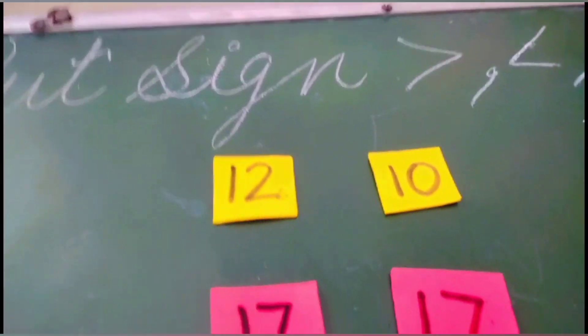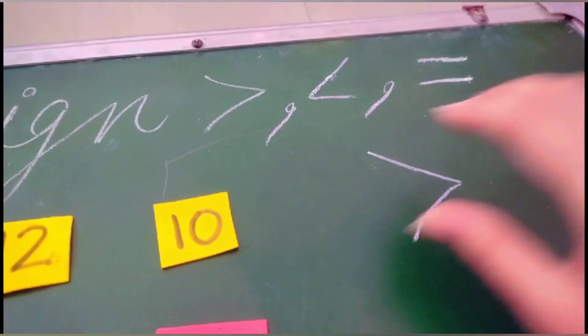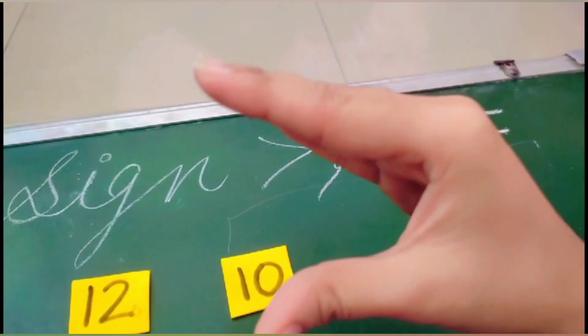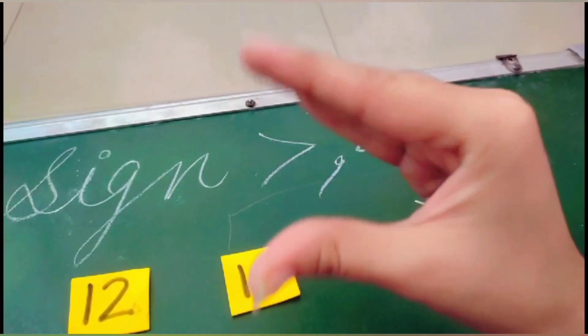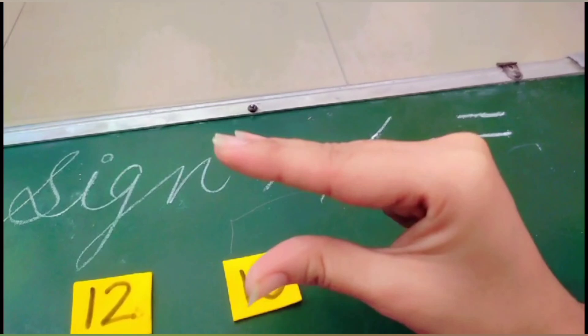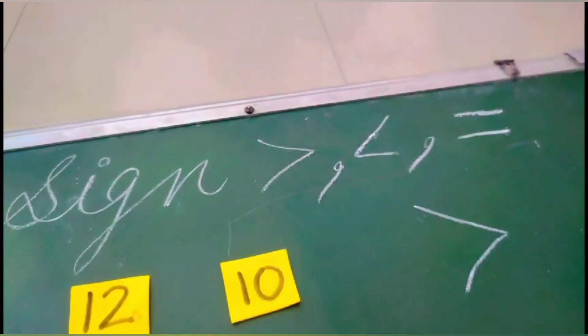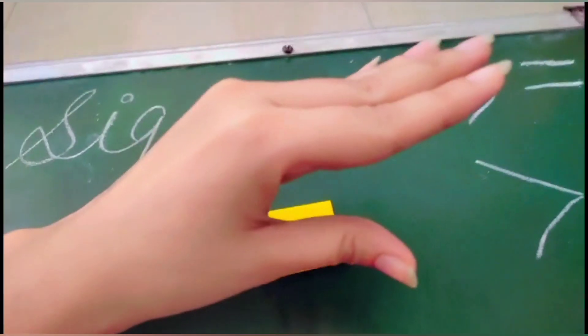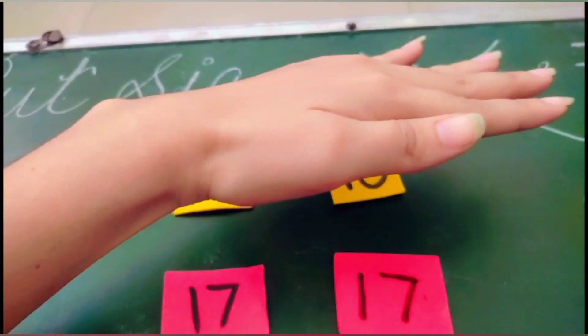Hello everyone, in today's video I am going to teach put sign. First of all you have to say your students make a V. Open your mouth like this. On the left side from the left hand, on the right side from the right hand. And for equals to you have to use both the hands horizontally.